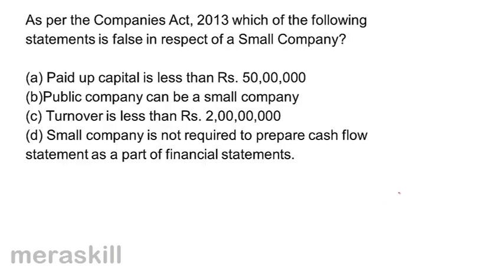Which statement is false in respect of a small company? Small company can have paid up capital of less than 50 lakhs — true. Public company cannot be a small company — that is false. Turnover less than 2 crores — true. Small company is not required to prepare cash flow statement — true. So B is false: public company can be a small company is the false statement.